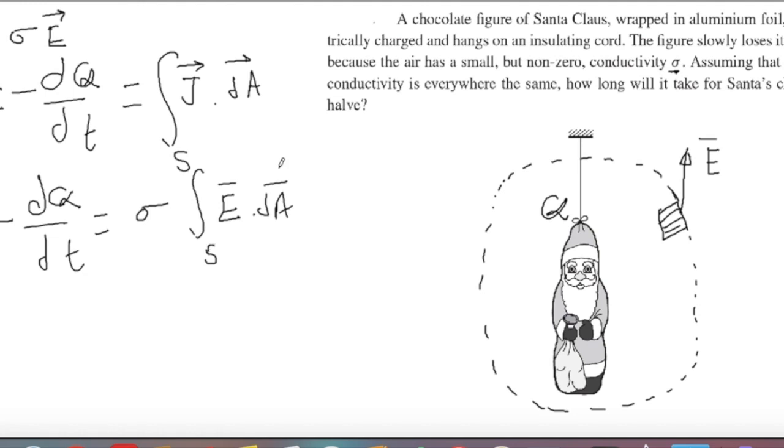This is equal to sigma times integral E vector dot dA vector for this complete surface. We know that integration of electric field on a closed surface represents the total flux to that surface according to Gauss's law, so I can write it Q over epsilon zero. There is a very nice, very simple relation that can be easily integrated.